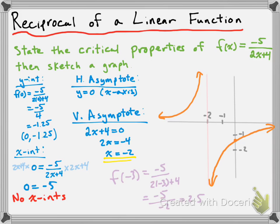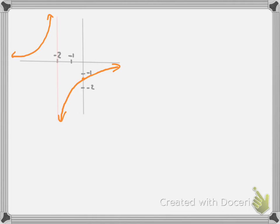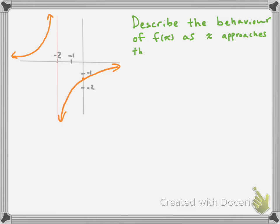We're not completely done yet — I have another question to consider. Here's the graph we had. The question is to describe the behavior of f(x) as x approaches the vertical asymptote and as x approaches positive infinity and negative infinity. Let's start with the behavior as x approaches the vertical asymptote.